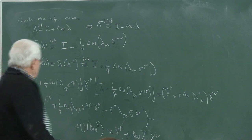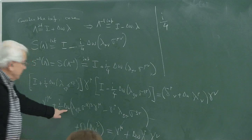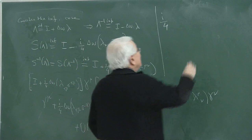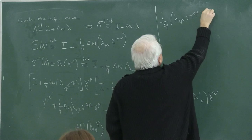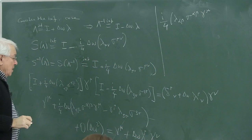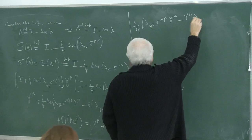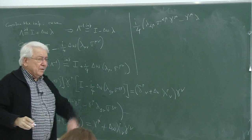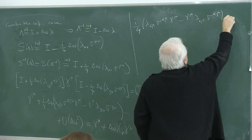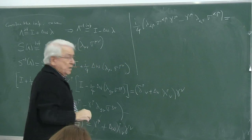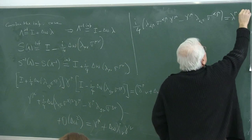The delta-omega terms on both sides must be equal. Cancelling delta-omega, I equate them: i/4 times (lambda_{αβ} σ^{αβ} gamma^μ minus gamma^μ lambda_{αβ} σ^{αβ}) equals lambda^μ_ν gamma^ν. This can be written as i/4 lambda_{αβ} [σ^{αβ}, gamma^μ] equals lambda^μ_ν gamma^ν.